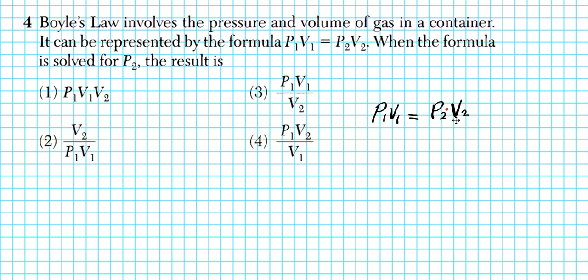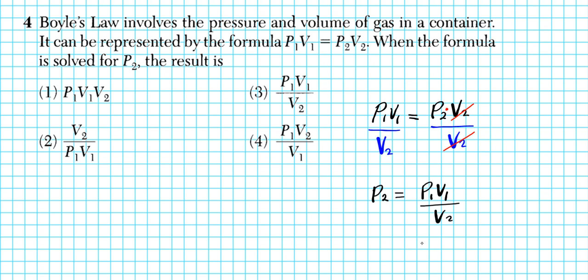So divide both sides by V2 to undo the product of P2 and V2, leaving P2 isolated. When you divide by V2, the V2 cancels and you have P2 equals P1V1 divided by V2. The answer to question 4 is option number 3.